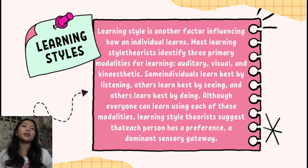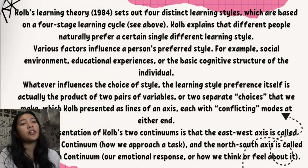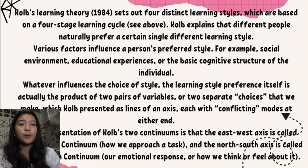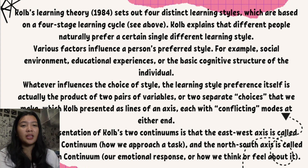Let's dig into the first theory: Kolb's learning styles. Kolb's learning theory sets out four distinct learning styles based on a four-stage learning cycle: concrete experience, reflective observation of the new experience, abstract conceptualization, and active experimentation.